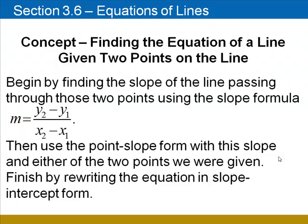In the next example, we'll talk about how to find the equation of a line if we're given two points that are on the line. We'll begin by finding the slope of the line passing through those two points using the slope formula m equals (y₂ minus y₁) over (x₂ minus x₁). Then we'll use the point-slope form with this slope and either of the two points we were given. We'll finish, as in the last example, by rewriting the equation in slope-intercept form.